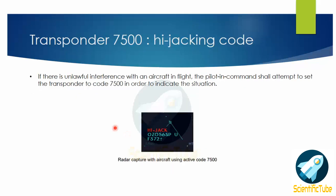Transponder code 7500 is called the hijacking code. If there is any unlawful interference with an aircraft in flight, the pilot in command shall attempt to set the transponder code to 7500 to indicate the situation. Below we have an image of a radar scope showing an aircraft squawking 7500 and how it looks.